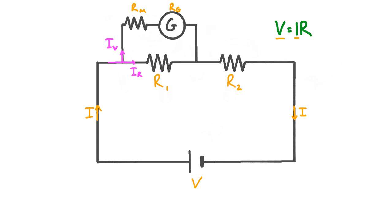Very fortunately, this problem is actually solved by the presence of the multiplier resistor. This resistor ensures that the overall resistance of the voltmeter is relatively high, meaning that only a very small amount of current flows through the voltmeter. So since the current through our voltmeter Iv is very small, the current through the resistor Ir is approximately equal to the current in the rest of the circuit I. The upshot of this is that connecting a voltmeter in parallel with R1 makes only a negligible change to the current in R1, therefore making a negligible change to the voltage across R1.